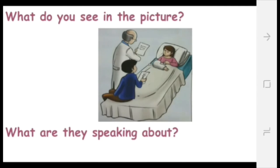Can you tell me what do you see in the picture? Here we can see a sick girl, a doctor, and a boy visiting a sick girl. It's obvious that the girl broke her arm and the doctor put a cast on her arm. Did you remember what's the meaning of cast? Yes, it means anjibir.